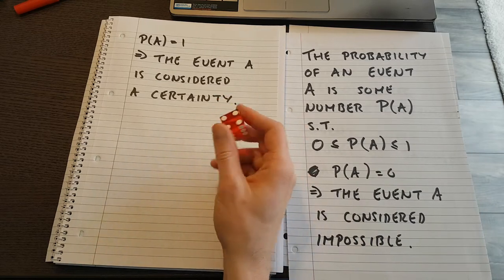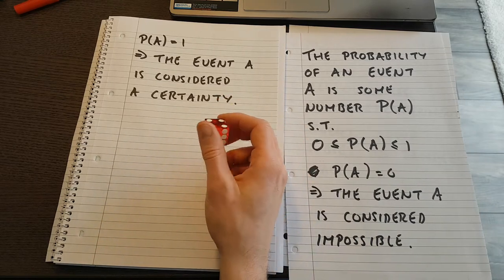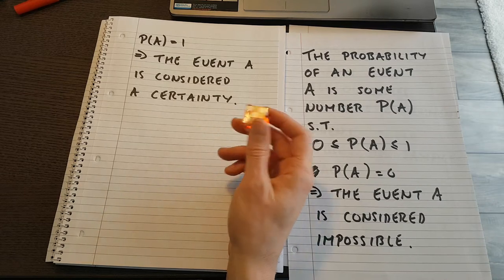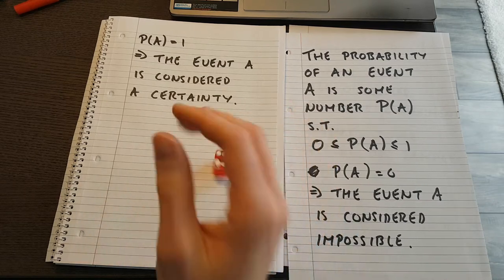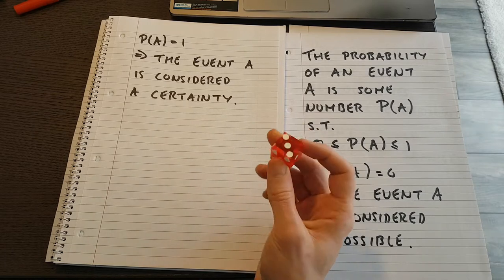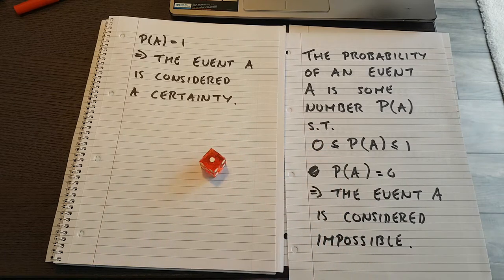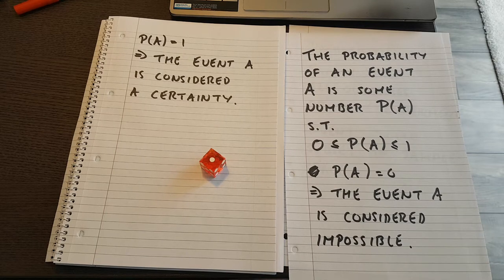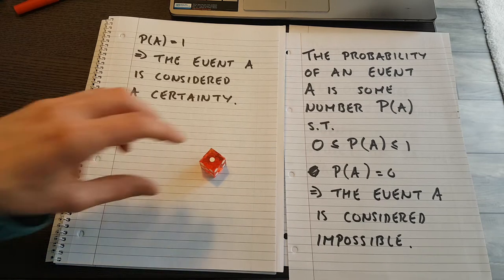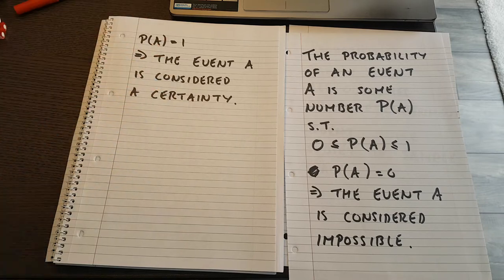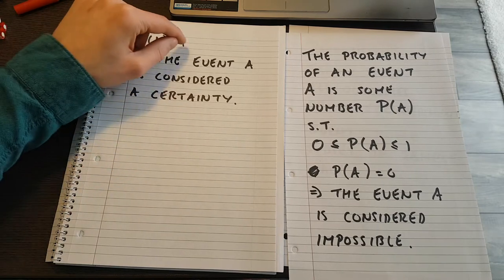The other one would be, say I roll the die, and the event is that I get a number between 0 and 10. Well, look at my numbers, 1, 2, 3, 4, 5, and 6, all of those numbers are between 0 and 10. That event is a certainty. So that would be an example of an event with probability 1.